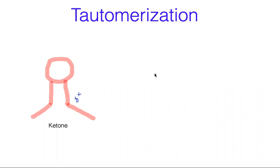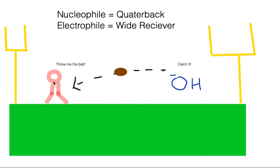So this is how I remember and understand tautomerization. We have a ketone, which is essentially an electrophile with an electrophilic carbon. You can think of electrophiles as a wide receiver on a football team — they receive electrons from nucleophiles such as hydroxide. The nucleophiles can be like the quarterback of a football team, as they're throwing their electrons to their wide receivers.